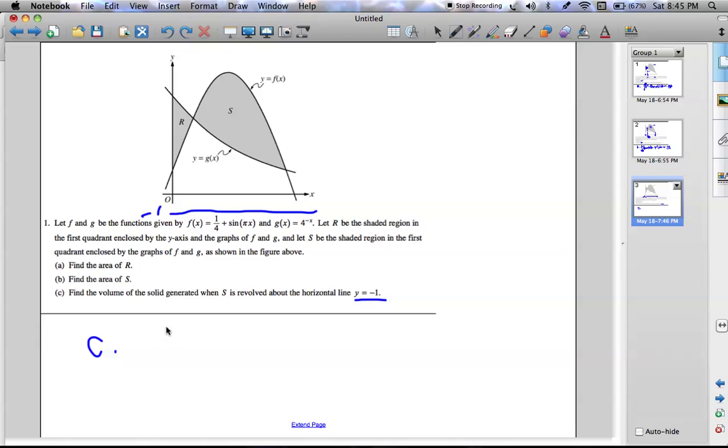Here we're going to set up a disk method with two radii. The outer one being this distance with width dx, and that distance is f of x, or b to c. It's f of x plus 1, to make up for that stuff under the x-axis.